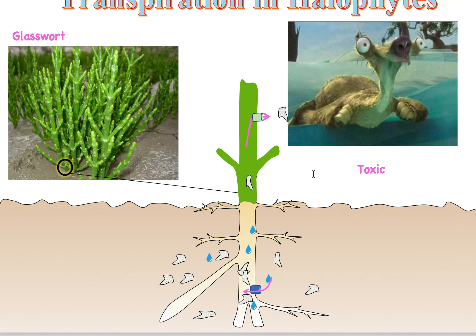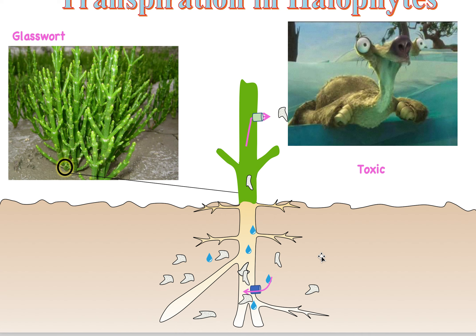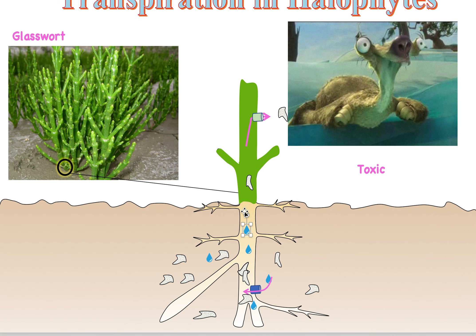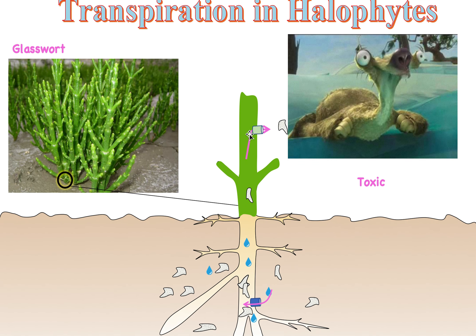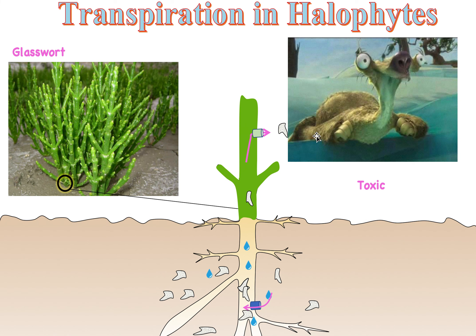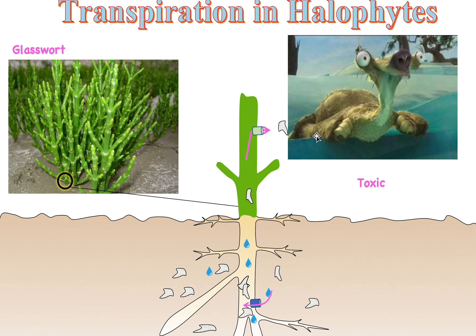In summary, halophytes are able to use the salty environment and pump in all the salt to ensure that water doesn't leave into the salty environment, but rather stays inside the roots so that it can use the water for photosynthesis, growth, and survival. That's it for halophytes — this is all you really need to know. I hope this made sense.